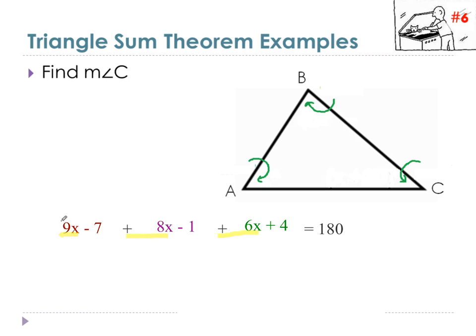These are all alike. They are like terms. So we can combine these by adding the coefficients. We have 9x plus 8x plus 6x, which equals a total of 23x. So we have 23x.